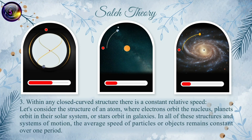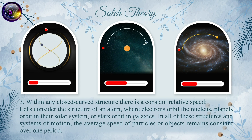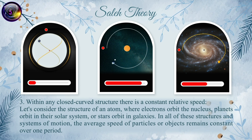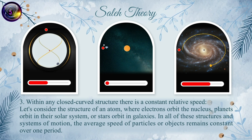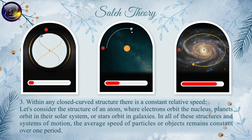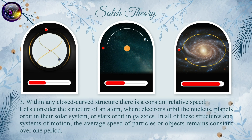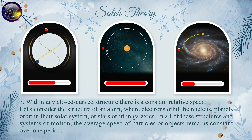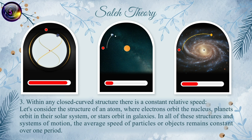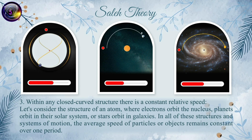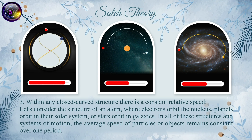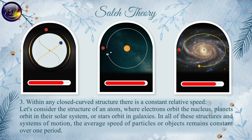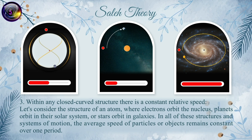Principle 3: Within any closed-curve structure there is a constant relative speed. Consider the structure of an atom, where electrons orbit the nucleus, planets orbit in their solar system, or stars orbit in galaxies. In all of these structures and systems of motion, the average speed of particles or objects remains constant over one period.